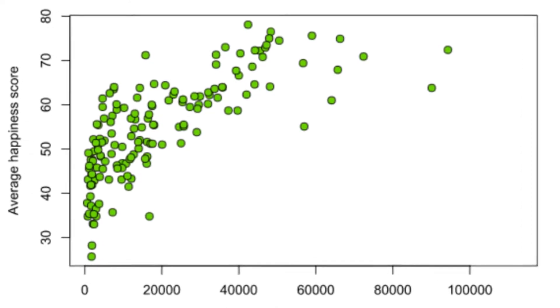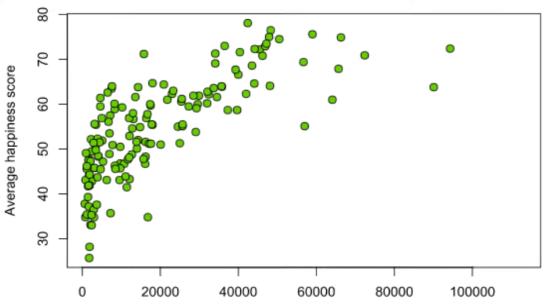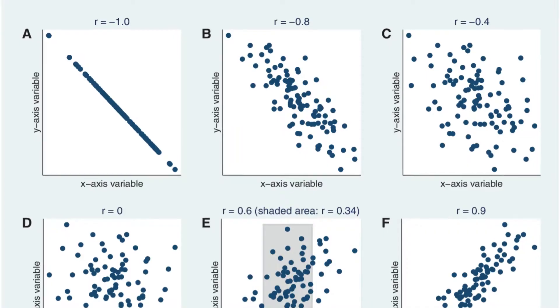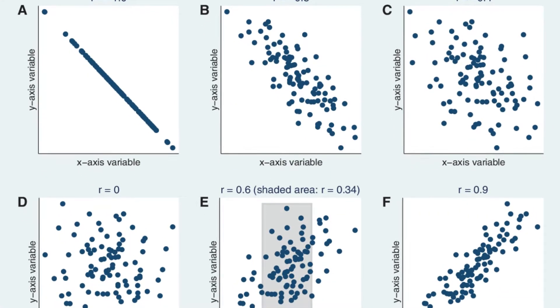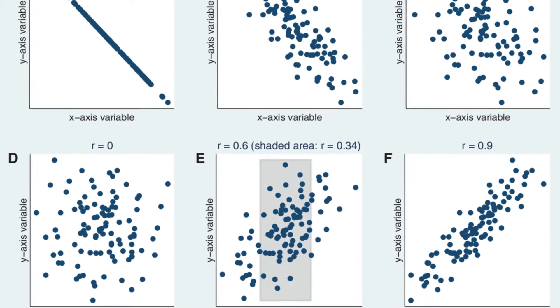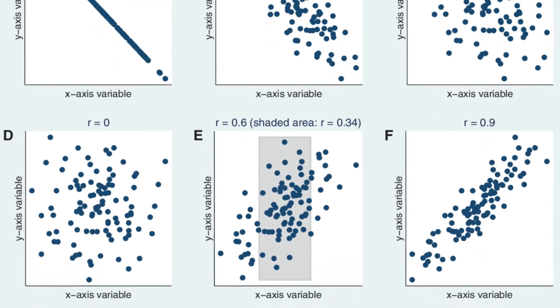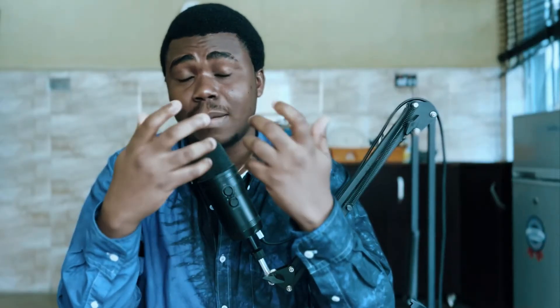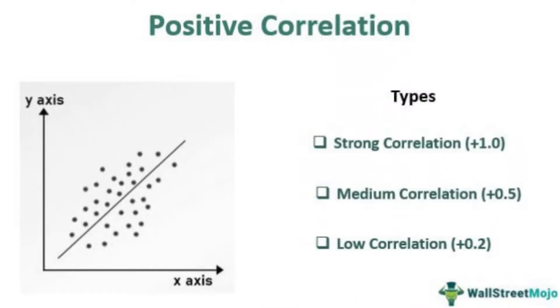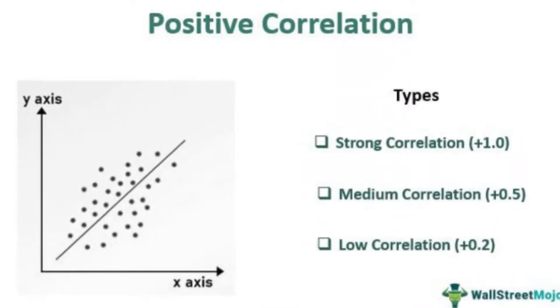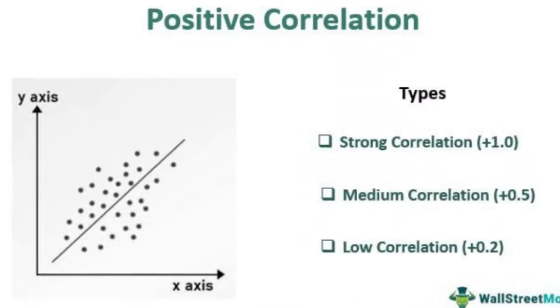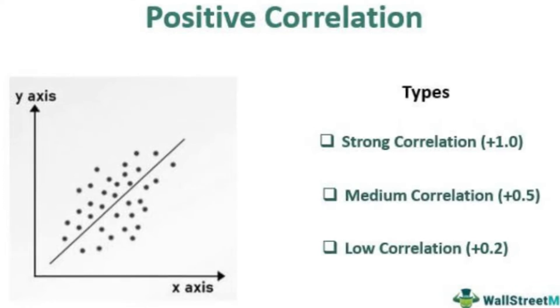In the area between these two axes we have dots. Each dot represents the point of intersection between the value of X and the value of Y. When you plot your scatterplot, it is supposed to give you a shape in the form of a straight line.